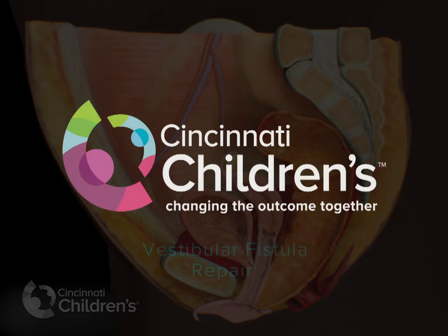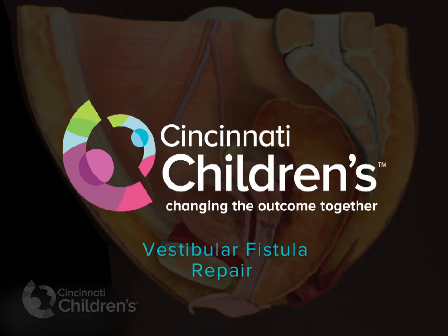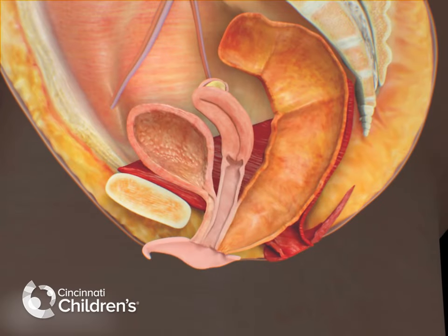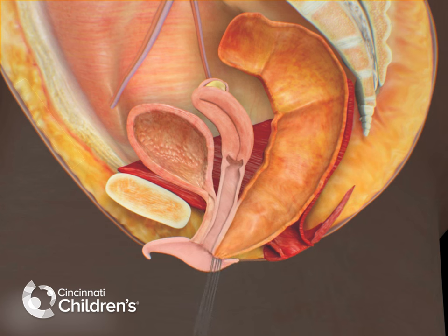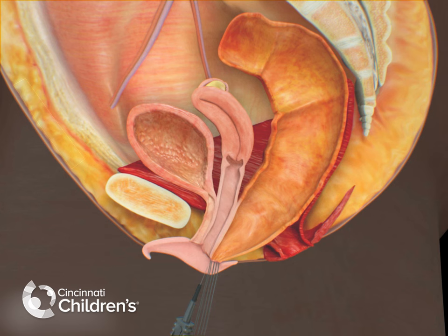We are looking at a recto-vestibular fistula, which is one of the most common malformations that we see in females. Here, the rectum opens in the posterior aspect of the vagina called the vestibule. In this malformation, the anterior wall of the rectum and posterior wall of the vagina share a common wall.